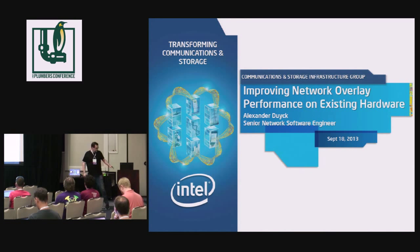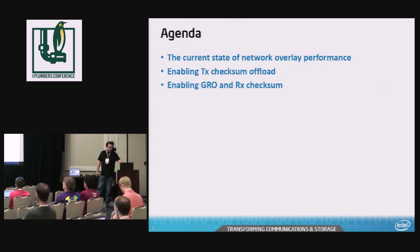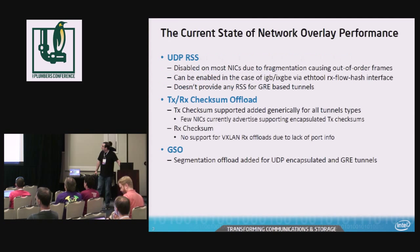As the slide says, the emphasis here is on improving network overlay performance on existing hardware. Quick agenda: going to go over what's currently there for tunnels, enabling TX checksum offload, and enabling GRO and RX checksum offload for encapsulated tunnels.